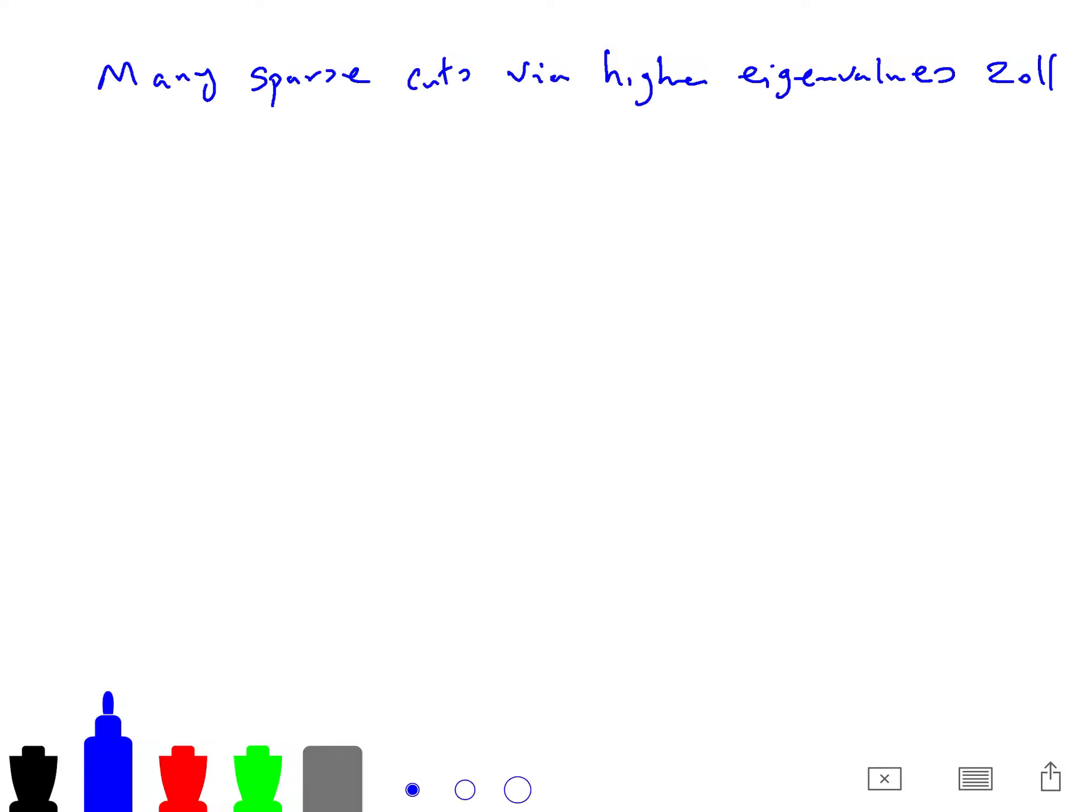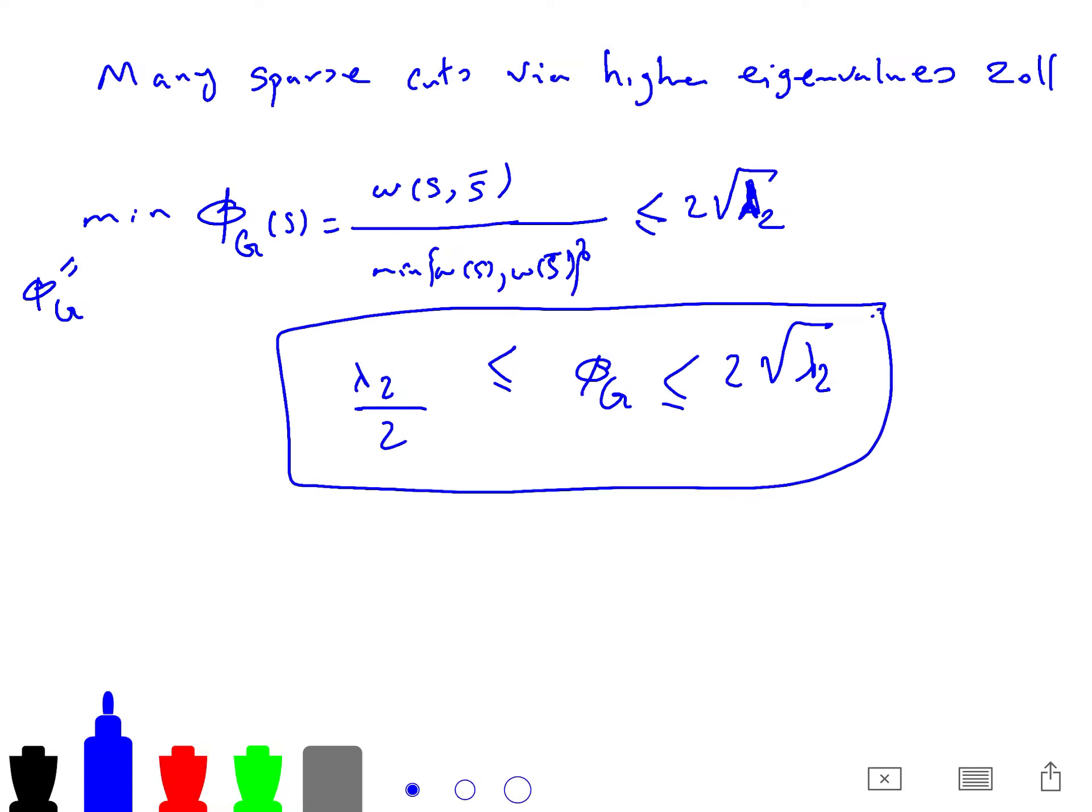And the idea is that, same as before, that we had some expansion omega(s) and weights of s bar. And we know that this is less than 2 root of lambda 2. So the traditional Cheeger inequality says that the minimum of this, the minimum of all of these s's, so the minimum of this, which is called phi of g. So phi of g is sandwiched between lambda 2 over 2 and 2 root of lambda 2. This is the classical Cheeger inequality.